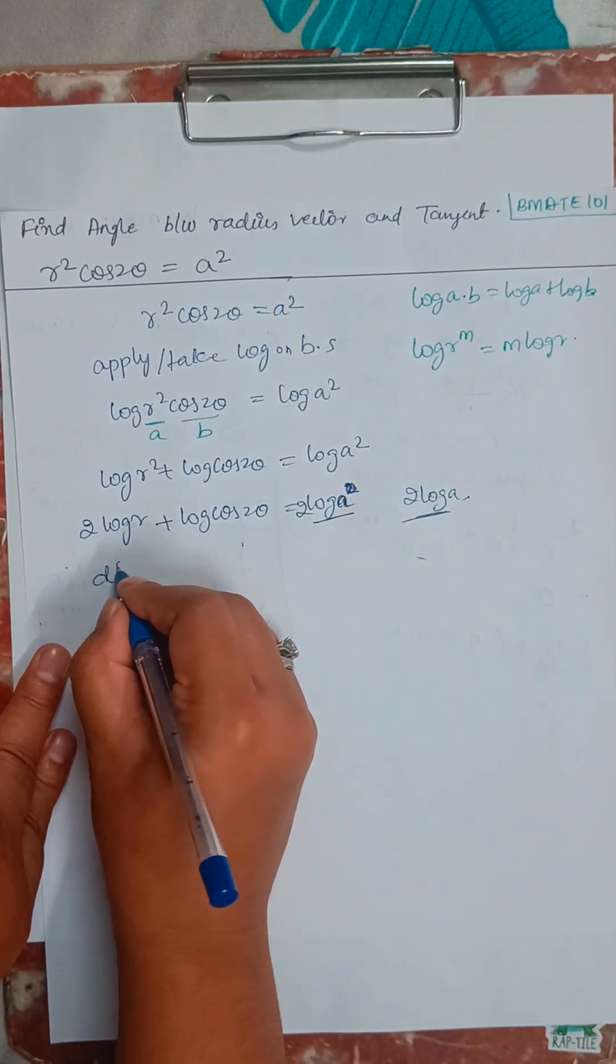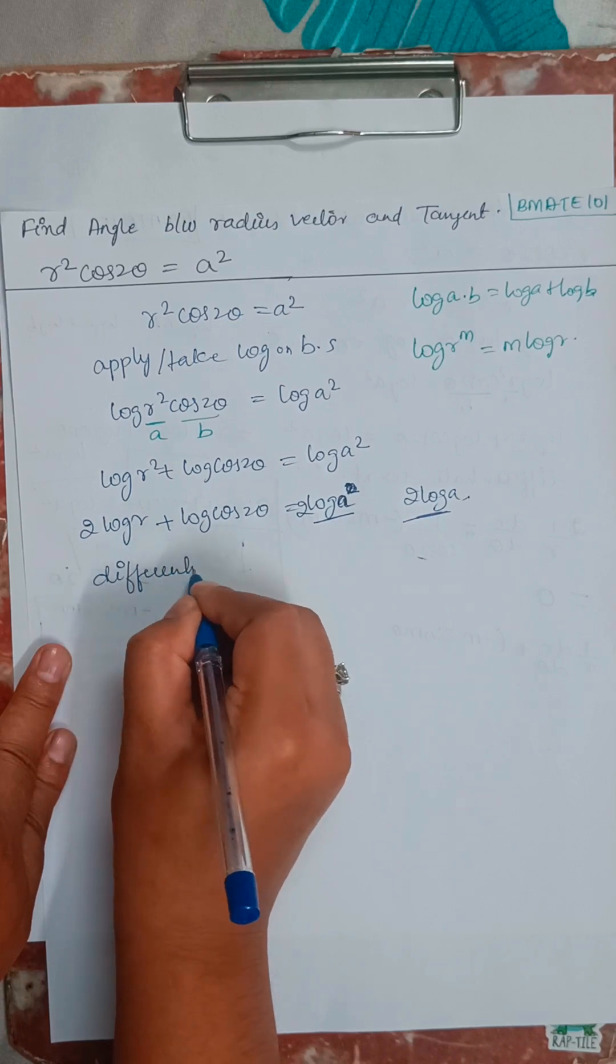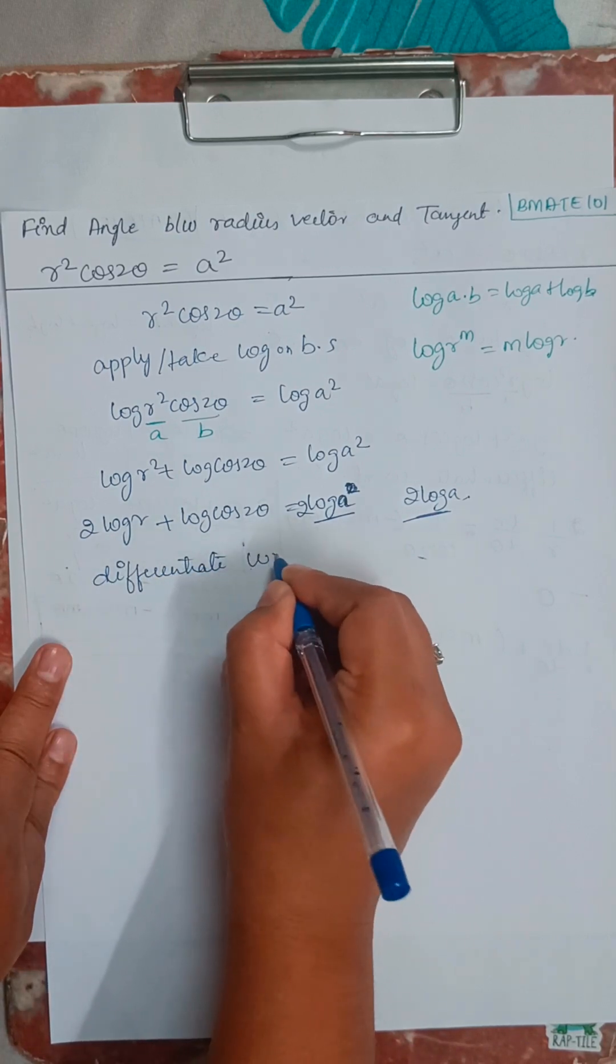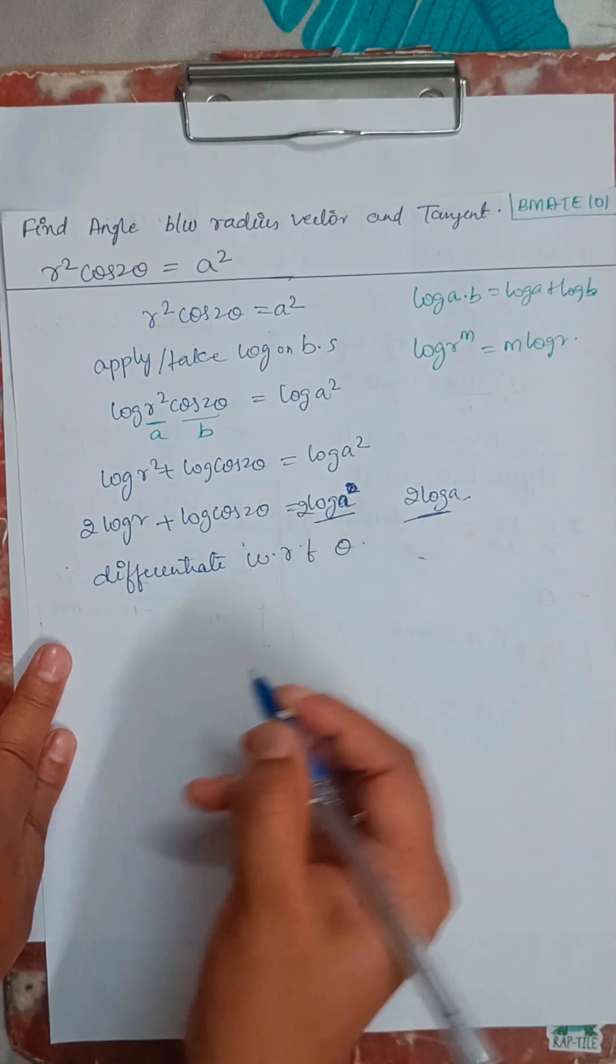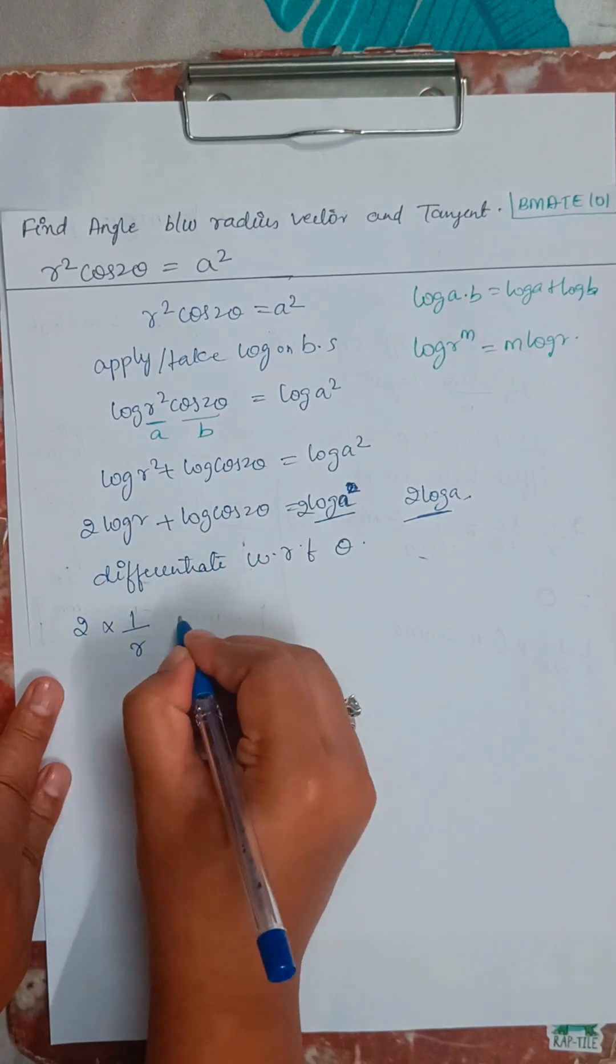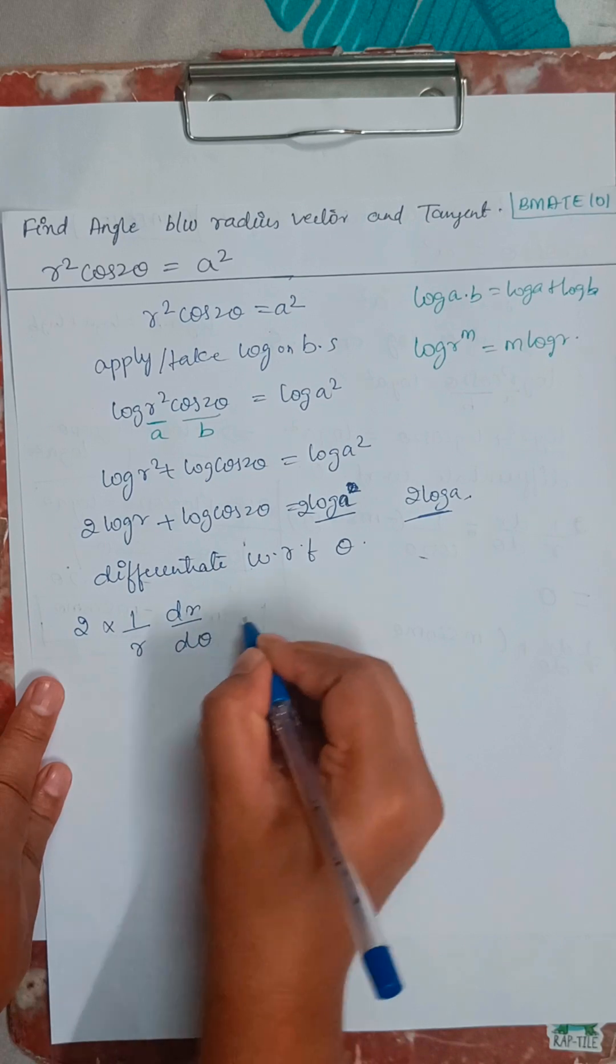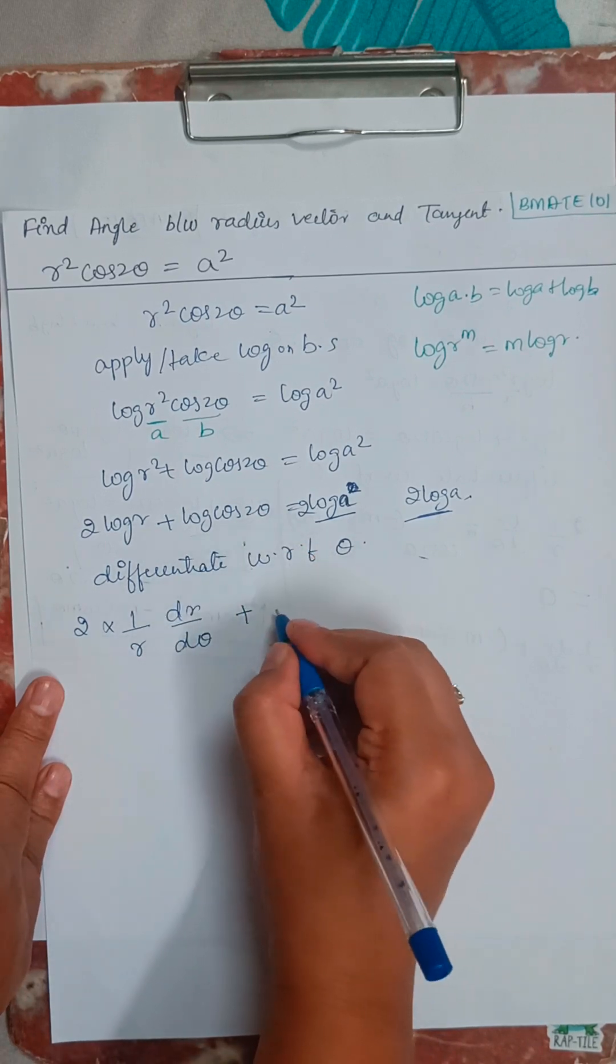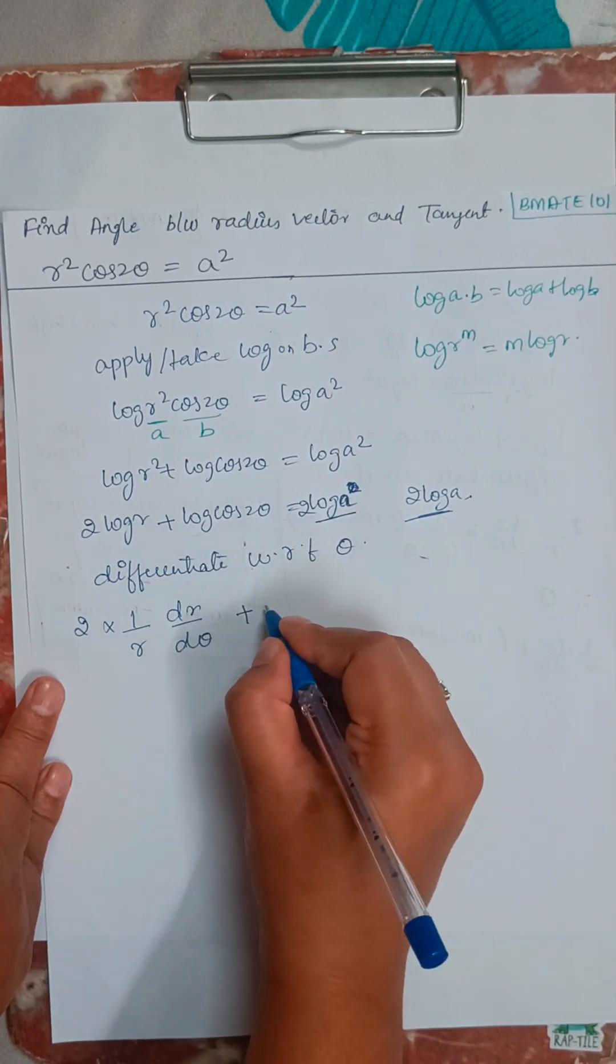Here we will start differentiating with respect to theta. So I will write 2 times 1 by r, differentiation of r is dr by d theta, plus,